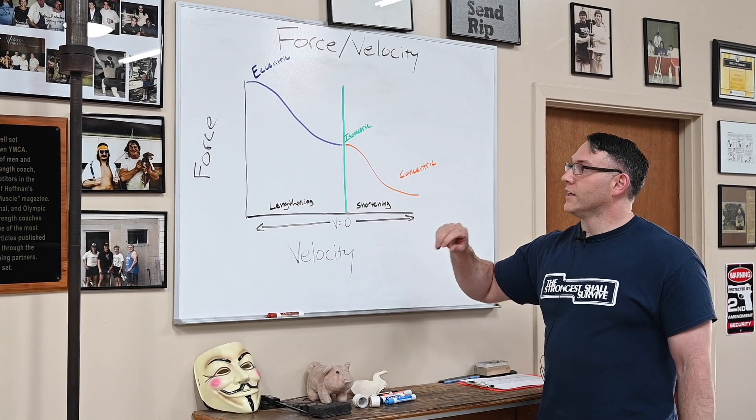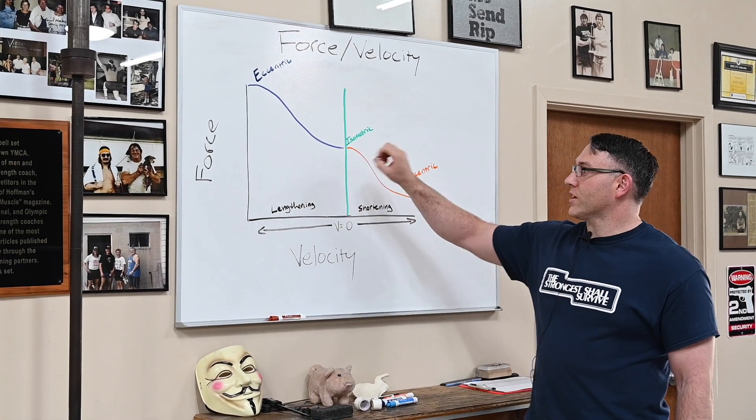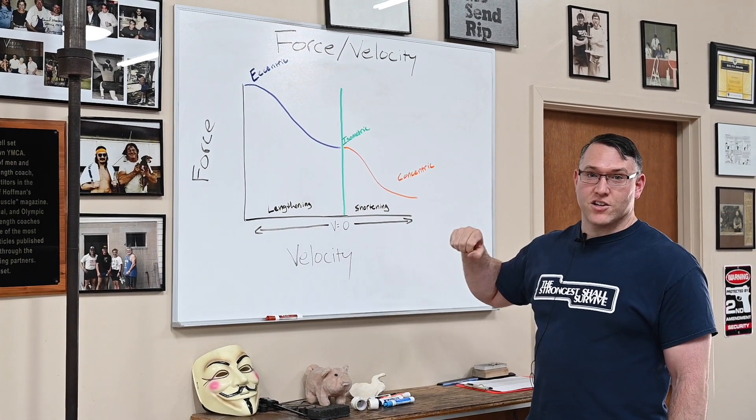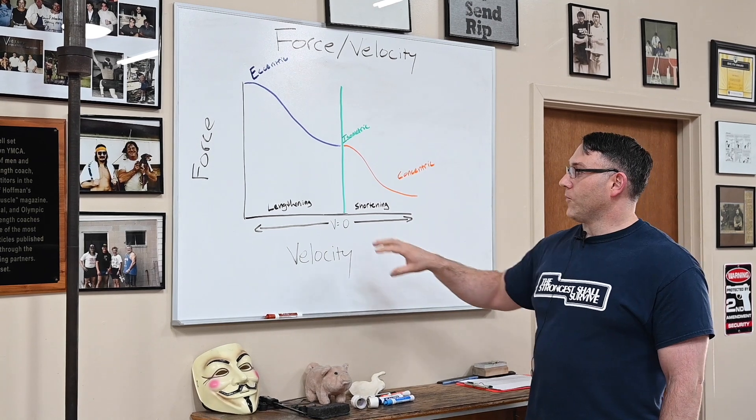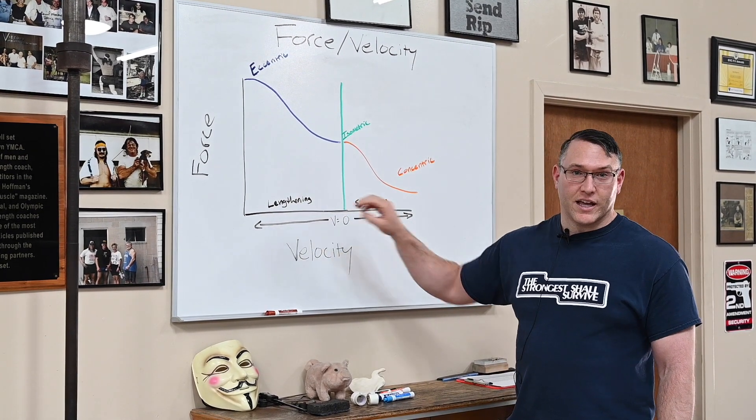What you see here is the relationship between eccentric, isometric, and concentric muscle actions relating to velocity of muscle lengthening and shortening.